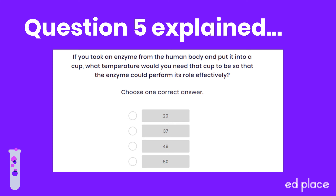Question five: if you took an enzyme from the human body and put it into a cup, what temperature would you need that cup to be so the enzyme could perform its role effectively? This is an application question — taking something you know and applying it to a new situation. Hopefully you're aware that the human body temperature is 37 degrees. Enzymes have an optimum temperature — the temperature at which they work fastest — and it makes sense that enzymes in the human body have an optimum temperature of 37 degrees. Most exams will say the optimum temperature is about 40 degrees, but if you're ever given it on a graph, read it directly off the graph.